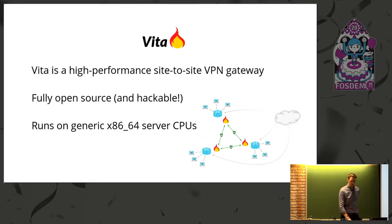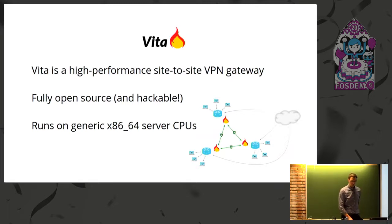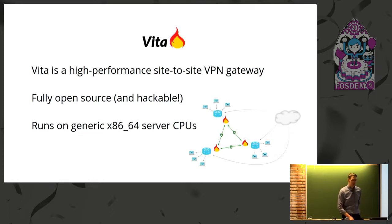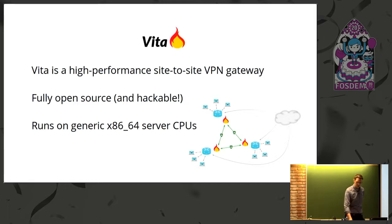Vita is a high-performance site-to-side VPN gateway. It's fully open source and it's hackable — by hackable here I mean that it has a very small and hopefully easy-to-understand code base. It runs on generic x86-64 server CPUs and Linux.